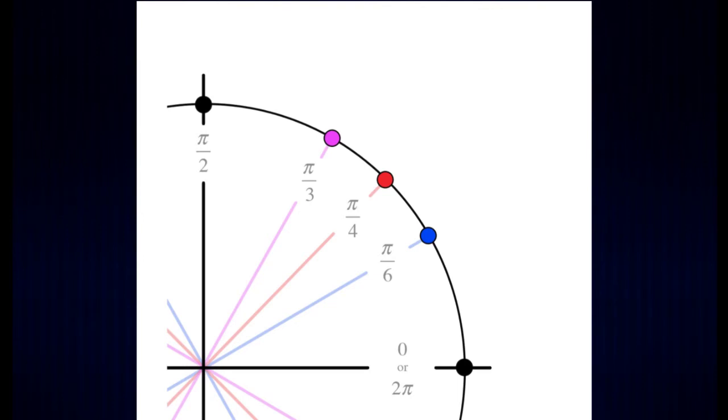And here we have it: all of the angles in quadrant one of the unit circle. Zero, pi over six, pi over four, pi over three, pi over two.